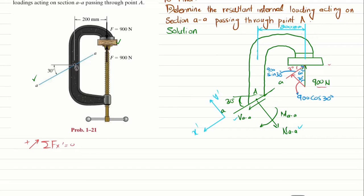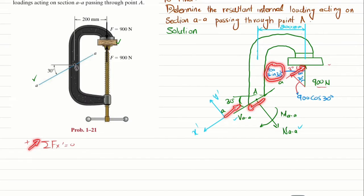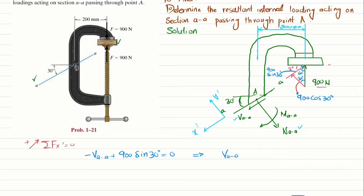Applying the equation of equilibrium: the sum of all forces along the X-dash direction equals zero. One force along X-dash is V_AA, which is in the positive direction, and the other is 900 sin 30° in the negative direction. So: minus V_AA plus 900 sin 30° equals zero. Therefore, V_AA equals 450 Newton.